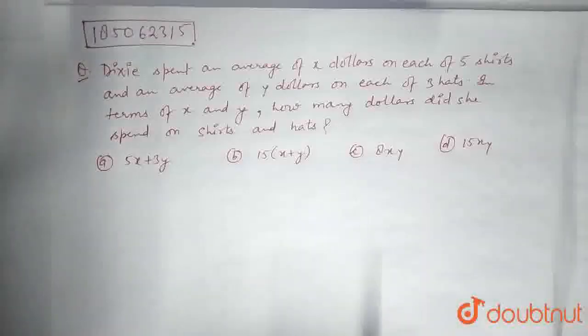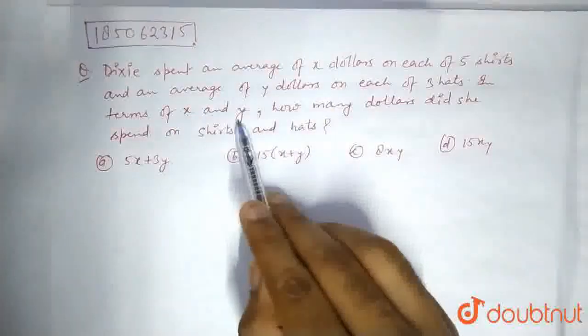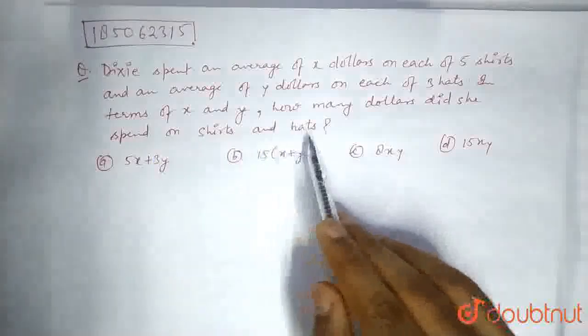So, Dixie spent an average of X dollars on each of 5 shirts and an average of Y dollars on each of 3 hats. In terms of X and Y, how many dollars did she spend on shirts and hats?